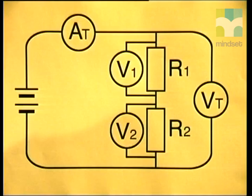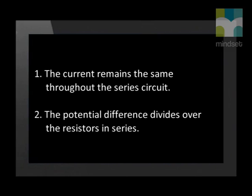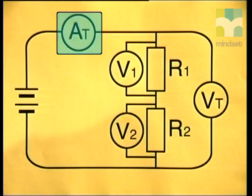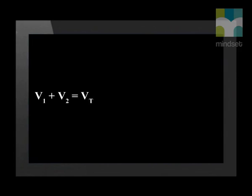The final part of our revision is to look at the difference between series and parallel circuits. A series circuit is one in which the current moves through all the components one after the other. The current remains the same throughout the series circuit. The potential difference divides over the resistors in series, so V1 plus V2 is equal to V total. Finally, the total resistance in a series circuit is the sum of all the resistors: R1 plus R2 equals R total.